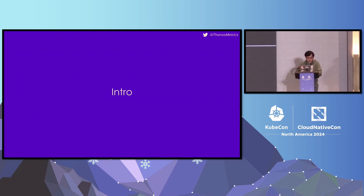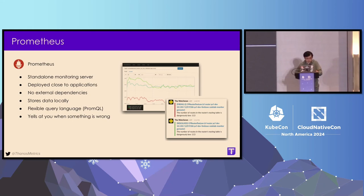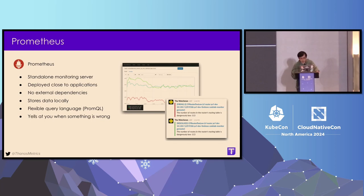Let's start with the introduction. If you want to talk about Thanos, first we need to talk about Prometheus. But since people attend this talk, I assume everyone probably already have some kind of background for Prometheus, so I will not dive too deep. The key thing to know here is that Prometheus is known to be designed to work as a single application in a single machine. It uses a pull model to scrape metrics. It also has some cool features like TSDB, PromQL engine, and alerting.